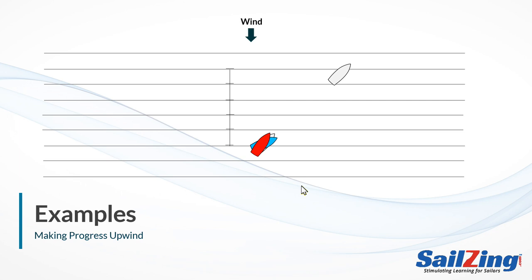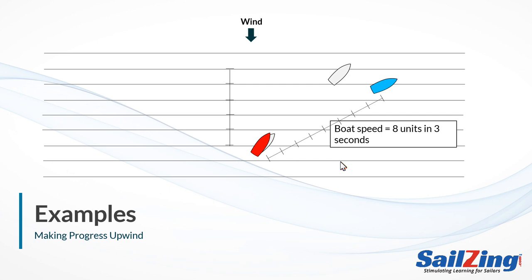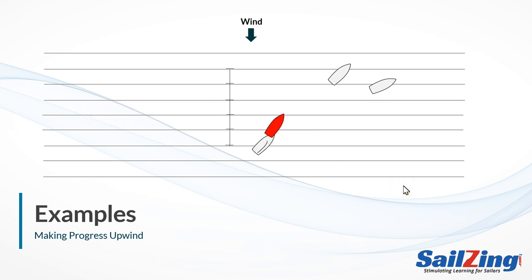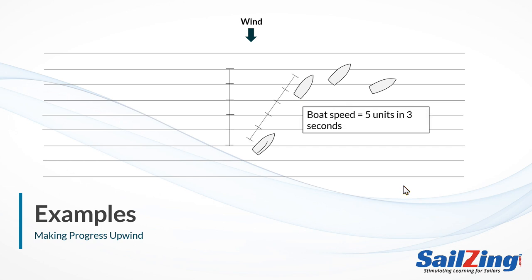To show the importance of VMG, let's compare the boat in the previous slide to two other boats sailing upwind. The grey boat in the picture is the ending point of the boat in our previous slide. The blue boat eases her sheets and sails faster but at a lower heading than the grey boat. The blue boat speed was 8 units in 3 seconds — her VMG was 4 units in 3 seconds. The red boat decides to sail closer to the wind, so she seats in tightly and heads up. Her speed was 5 units in 3 seconds, and her VMG was also 4 units per 3 seconds, just like the blue boat.